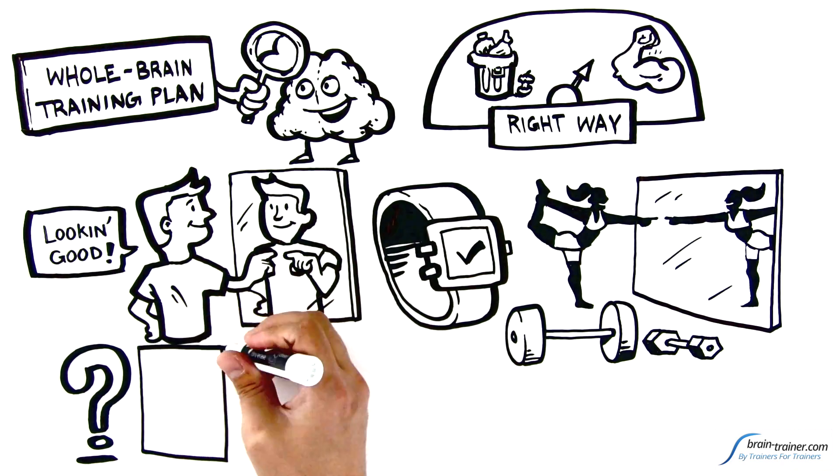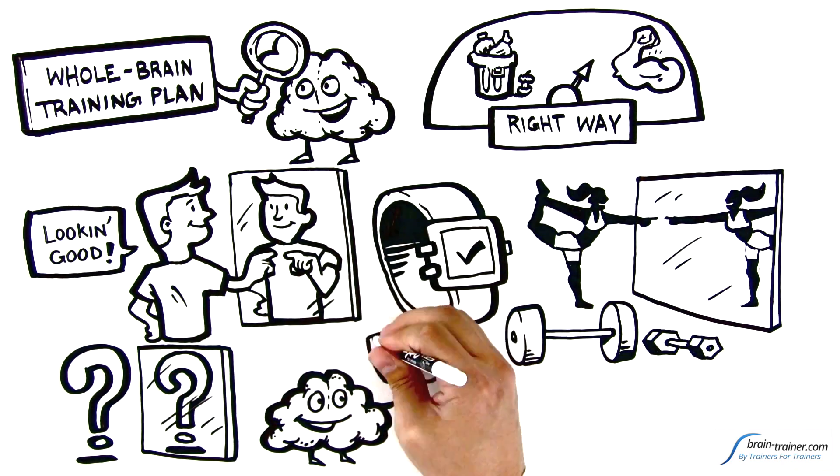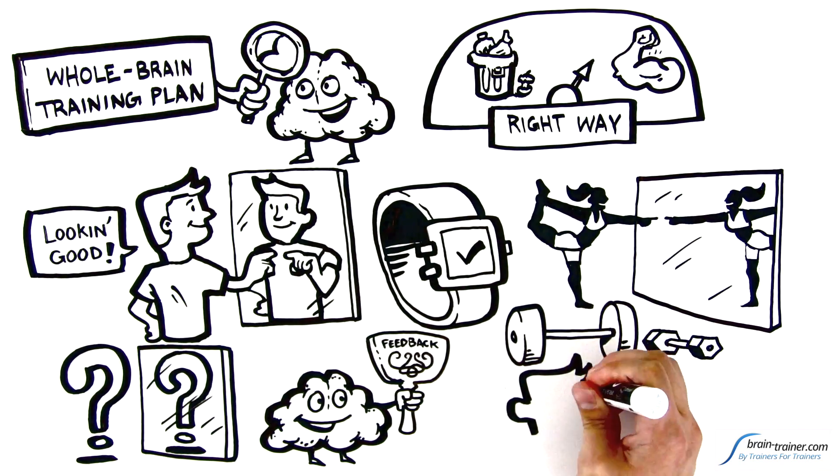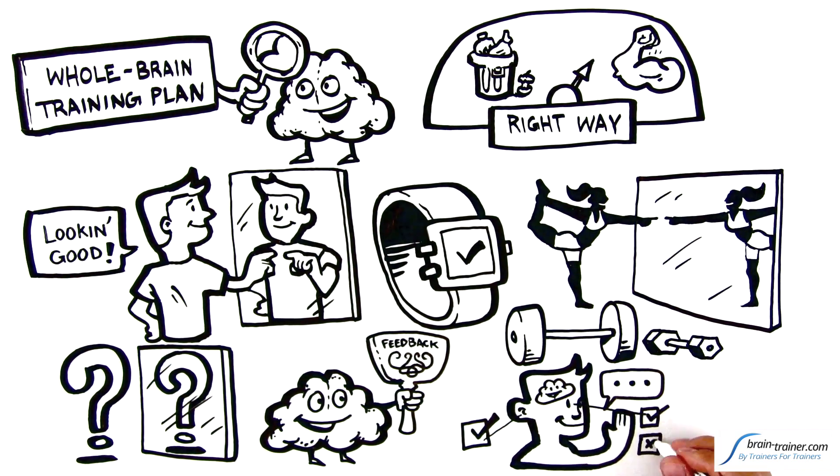But what kind of mirrors can show your brain what it's doing? Your brain sees itself in a mirror called feedback. Your brain tells you what to do or say, and it pays attention to the results that come back in through your senses.